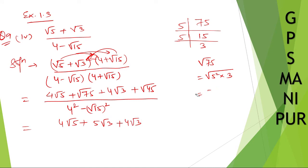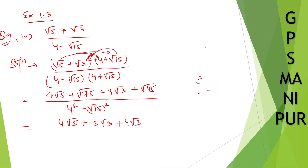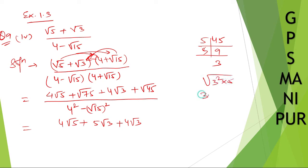This root 45 can also be simplified. Checking: 45 equals 9 times 5, and 9 equals 3 squared. So root 45 equals root of 3 squared times 5, which is 3 root 5. So root 45 can be written as plus 3 root 5. The denominator is 4 squared minus root 15 squared, which is 16 minus 15, equal to 1.